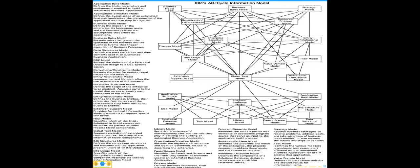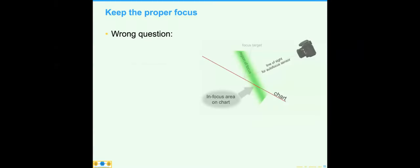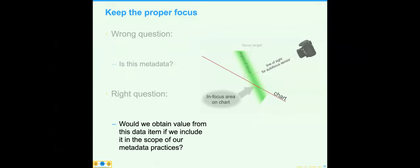Metadata is so important that IBM, in something called AD Cycle — application development cycle — came up with all the various types of metadata that can exist. It's a great place to study if you want to look specifically at metadata. But the real question is not 'is this metadata,' but 'would we obtain value from this data if we include it within the scope of our metadata practices?'